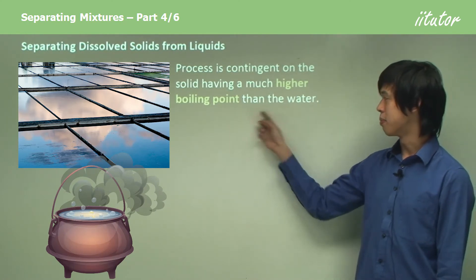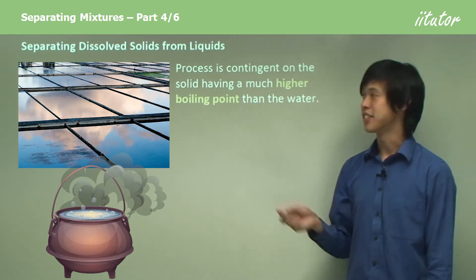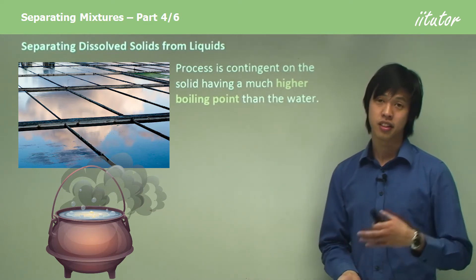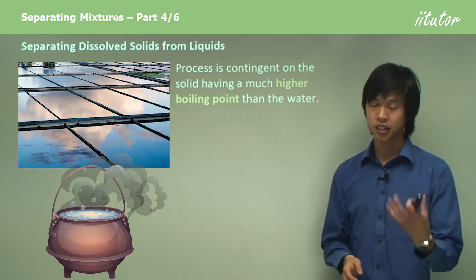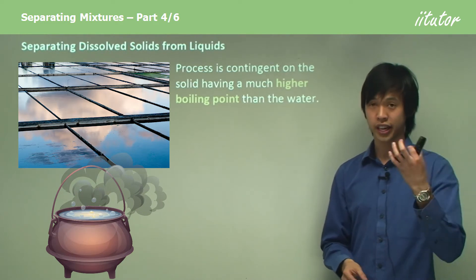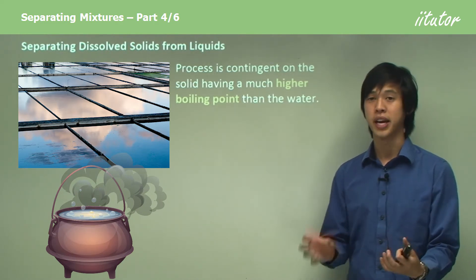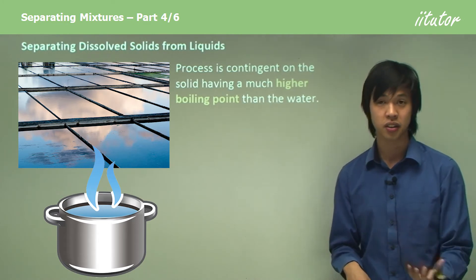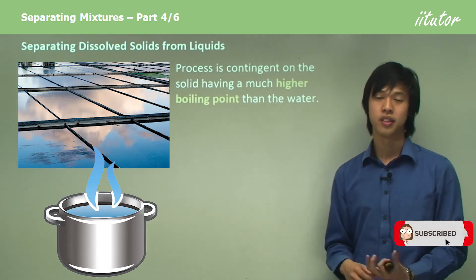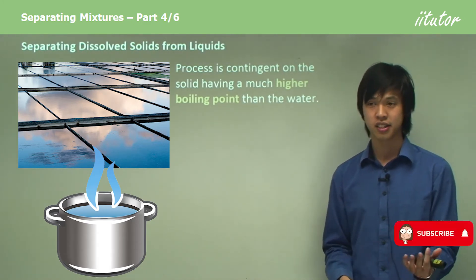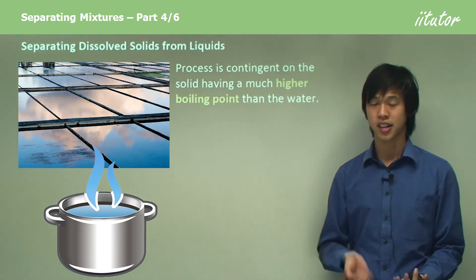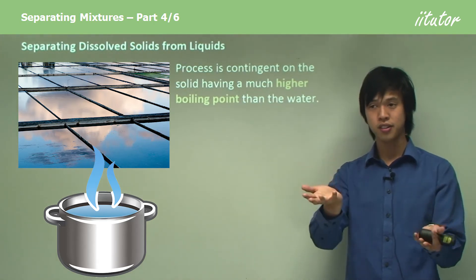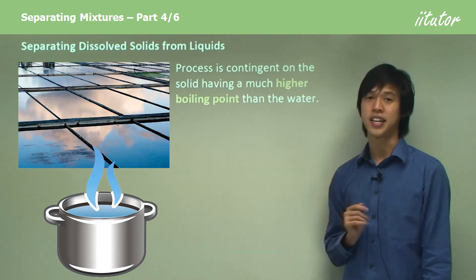The process is contingent on the solid having a much higher boiling point than water. The property we're exploiting is that the dissolved solid has a really high boiling point compared to the liquid it's dissolved in. For instance, salt may have a boiling point of several thousand degrees Celsius, whereas water is just a hundred degrees Celsius — so you can see there's a big difference, and that's what we're using to our advantage.